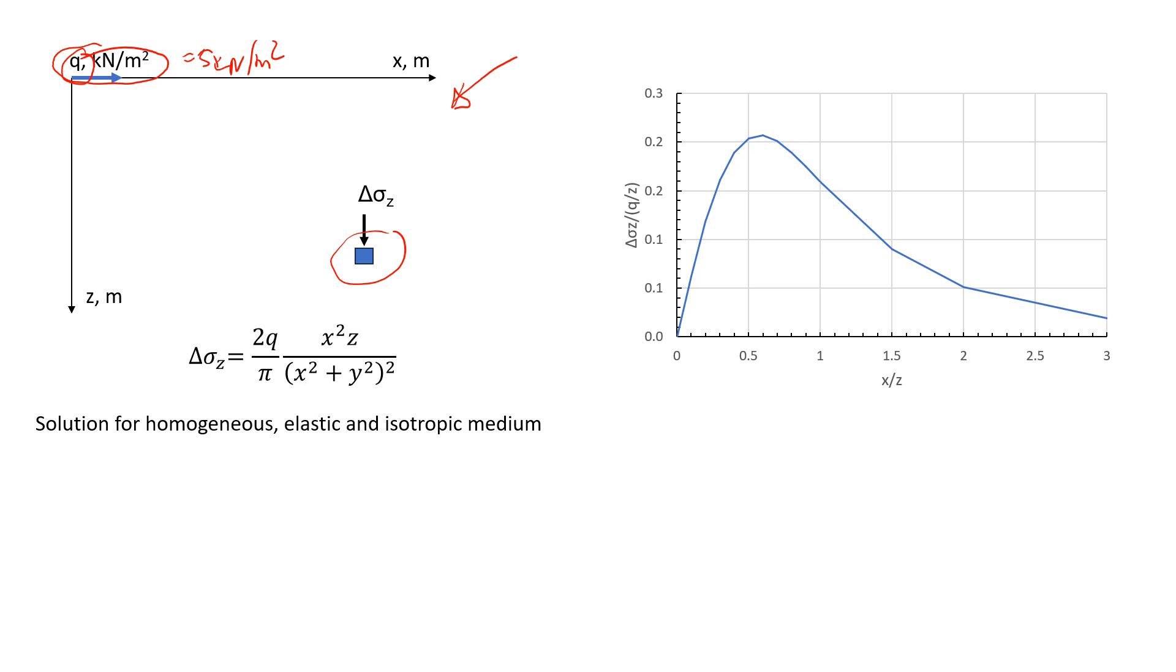And then we need to know the depth of the soil element, which is z. So in this case, z will be, let's assume, 4 meters, just for this example. And we would like to also know the distance. The distance will be called x, and let's assume that x is 5 meters. So this is what we're going to find, change in the vertical stress due to the load application.